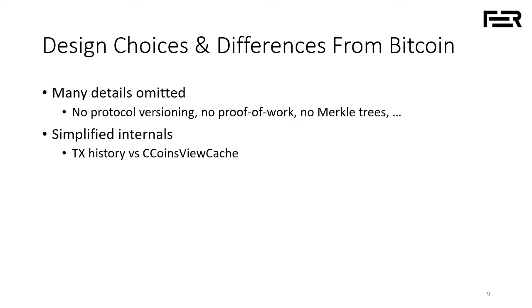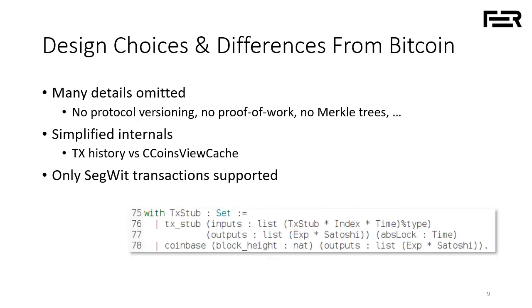We also simplify the internals. In particular, we define a data structure called TxHistory that contains a list of all transactions in a blockchain ordered sequentially from the Genesis block to the current block. There is no corresponding structure inside Bitcoin — the client is optimized for performance, so they keep track of spent and unspent coins not in a list but in a hash map. Also, we only support one kind of transaction.